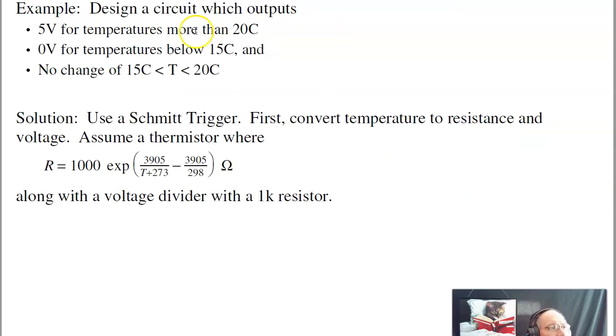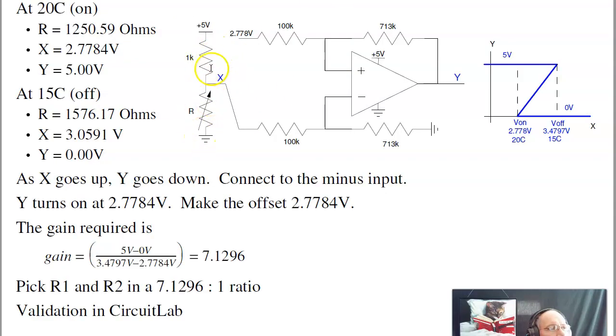For example, suppose I wanted to design a circuit which outputs five volts for temperatures more than 20 C, zero volts for temperatures below 15 C. In that case, I'd use the Schmitt trigger. First find the resistance at 20 C and 15 C, then convert that to a voltage divider. The voltages I want to switch at, I want to turn on at 2.77 volts, turn off at 3.05 volts, using this relationship. The point where I switch is the offset. I want to go to the negative input. When x is large, the output is low. When x is low, the output is large. That negative relationship means go to the minus input. And the slope is the gain. Output changes by 5 volts as the input changes by 0.7 volts, have a gain of 7 to 1. So make the resistor ratio 7 to 1. So this circuit gives you that VI characteristic. That's the Schmitt trigger that'll turn on at 20 C and off at 15 C.